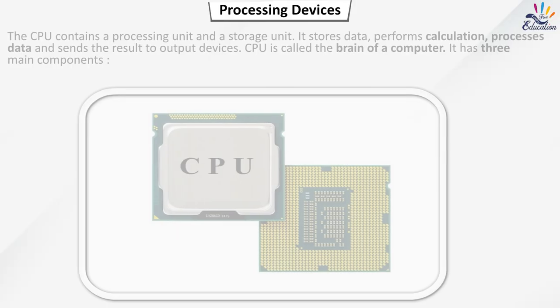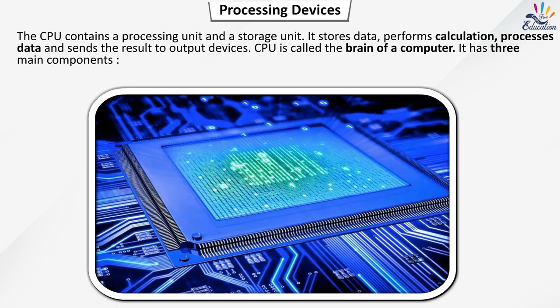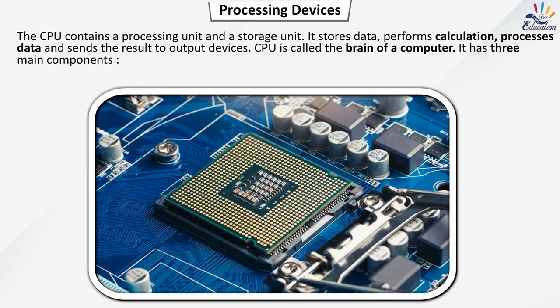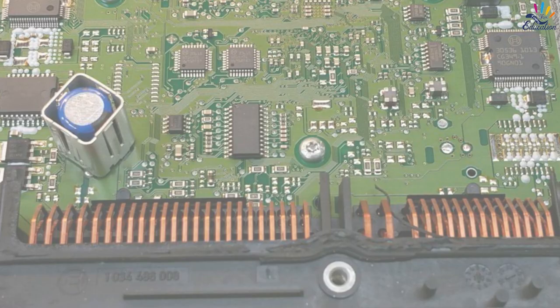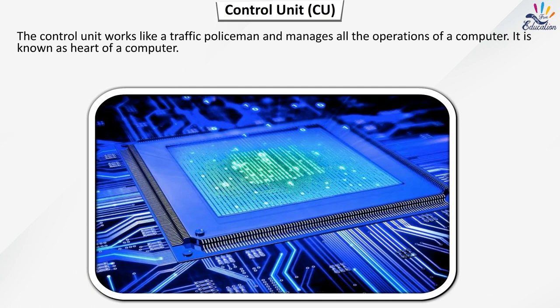Processing Devices. The CPU contains a processing unit and a storage unit. It stores data, performs calculations, processes data and sends the result to output devices. CPU is called the brain of a computer. It has 3 main components. The control unit works like a traffic policeman and manages all the operations of a computer. It is known as the heart of a computer.